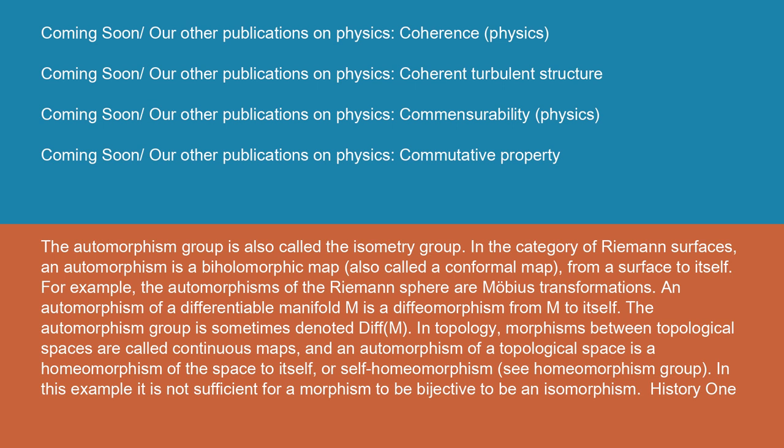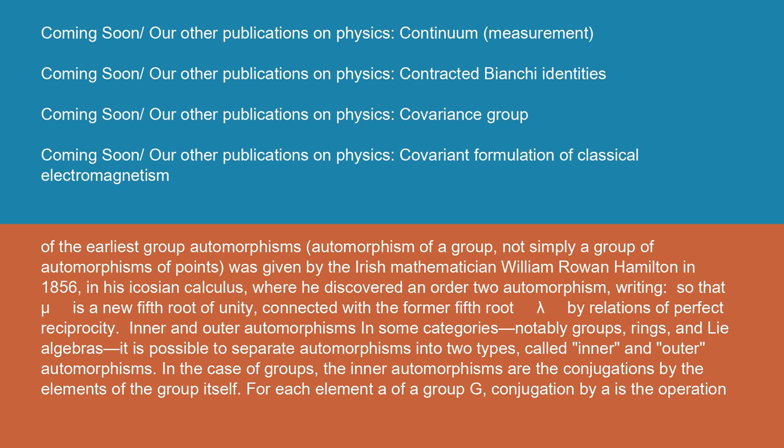History: One of the earliest group automorphisms, automorphism of a group, not simply a group of automorphisms of points, was given by the Irish mathematician William Rowan Hamilton in 1856 in his icosian calculus, where he discovered an order two automorphism, writing, 'so that μ is a new fifth root of unity connected with the former fifth root λ by relations of perfect reciprocity.'